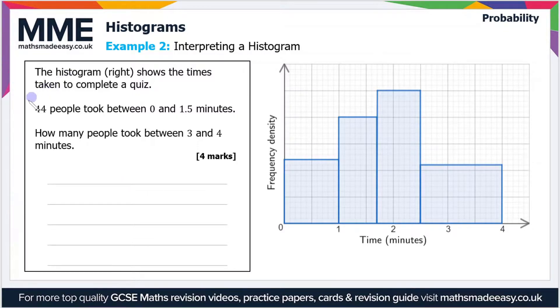In order to answer this question we need to work out what area is represented by one person. The question says that 44 people took between zero and 1.5 minutes. So how many squares are in that time frame?